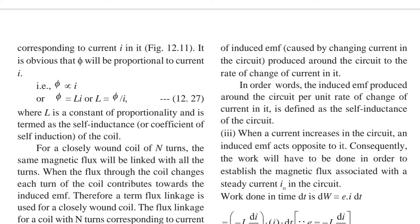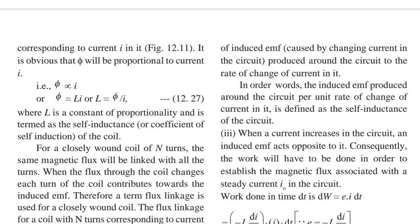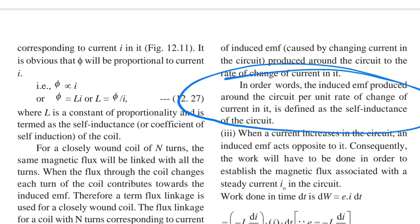In other words, the induced EMF produced around the circuit per unit rate of change of current in it is defined as self inductance. There are multiple definitions; you can use any one of them.